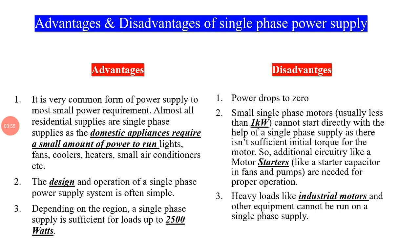Now we discuss advantages and disadvantages of single-phase AC supply, to understand why we need three-phase supply. The advantages are: single-phase AC supply is the most commonly used power supply for low power requirements, especially at the domestic level. Its design is very simple compared to other systems. It is sufficient for loads up to 2.5 kW.